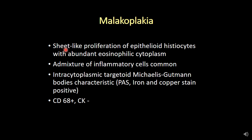Malacoplechia is a somewhat related condition morphologically. It is characterized by sheet-like proliferation of epithelioid histiocytes with abundant eosinophilic cytoplasm, and you typically see an admixture of inflammatory cells. Importantly, it has intracytoplasmic targetoid Michaelis-Gutmann bodies, which is a characteristic finding. These bodies are typically PAS positive, and iron and copper stains are also positive to confirm the diagnosis. CD68 will light up the epithelioid histiocytes and cytokeratin is negative. This condition is typically seen in hollow organs and is considered a chronic response to gram-negative organisms found in the urinary tract.